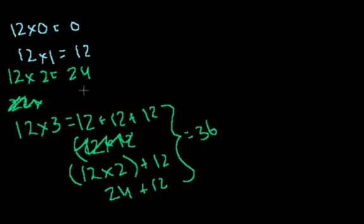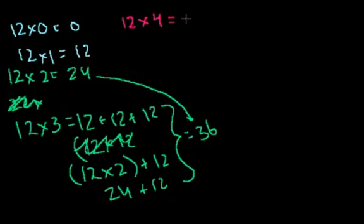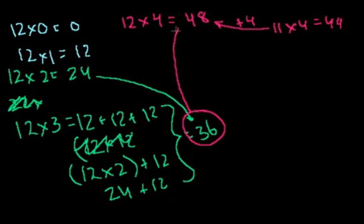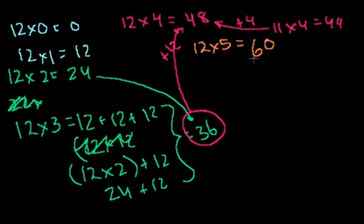So you get 36. When you are at 4, you get 48. How do you get 48? You add 12 to 36 and you get 48. So 12 times 4 is 48.